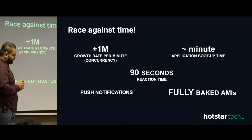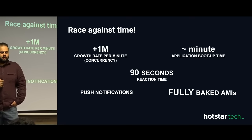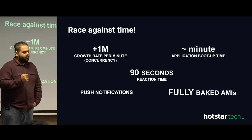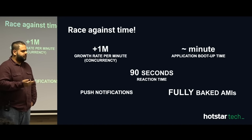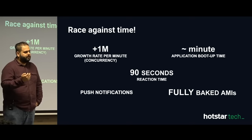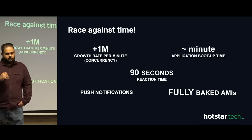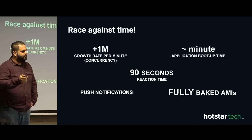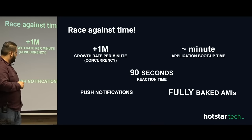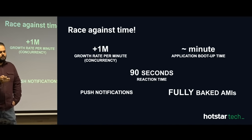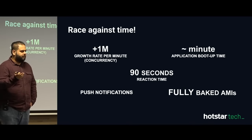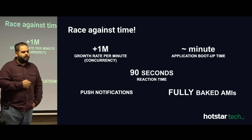We use fully baked AMIs. Tools like Chef or Puppet that provision or configure after the server is up add delay to your application becoming healthy. To save time, we use fully baked AMIs — even the container images have everything required to run the systems within themselves — so we do not have to wait for any Ansible, Chef, or Puppet script to configure the application.